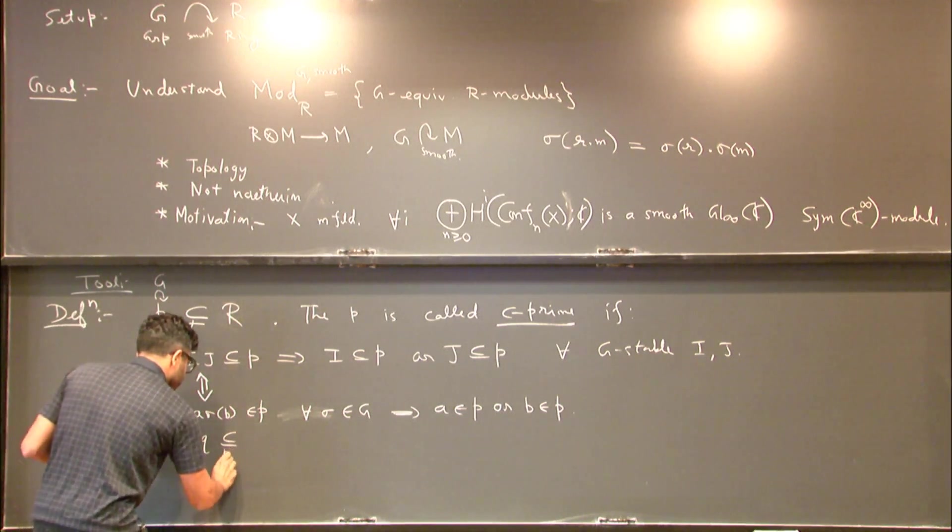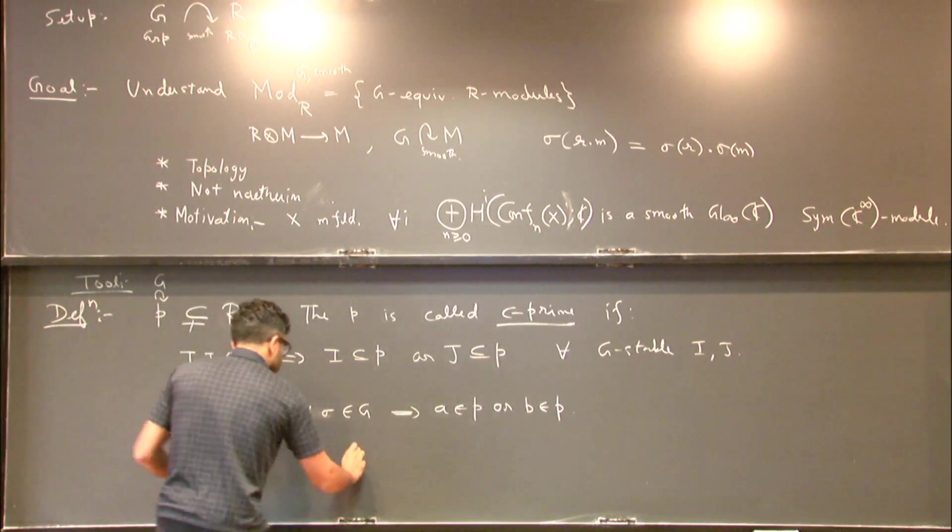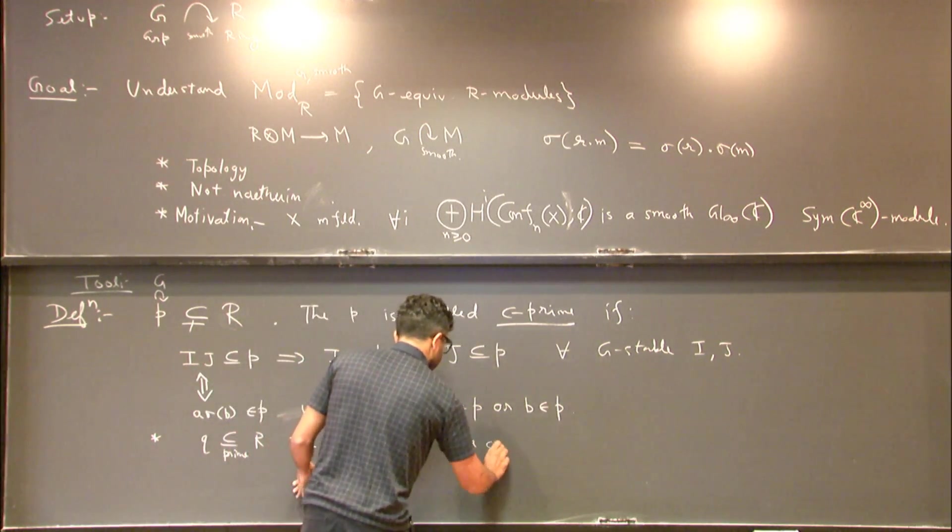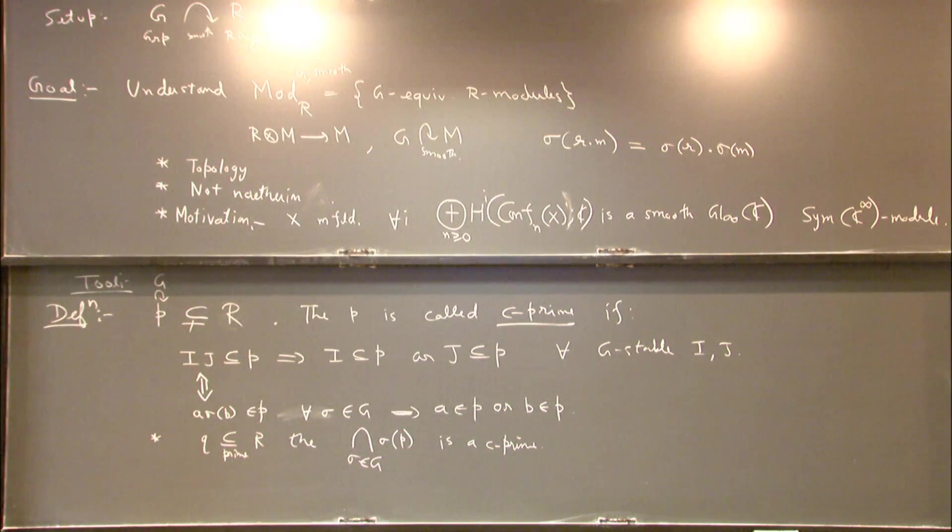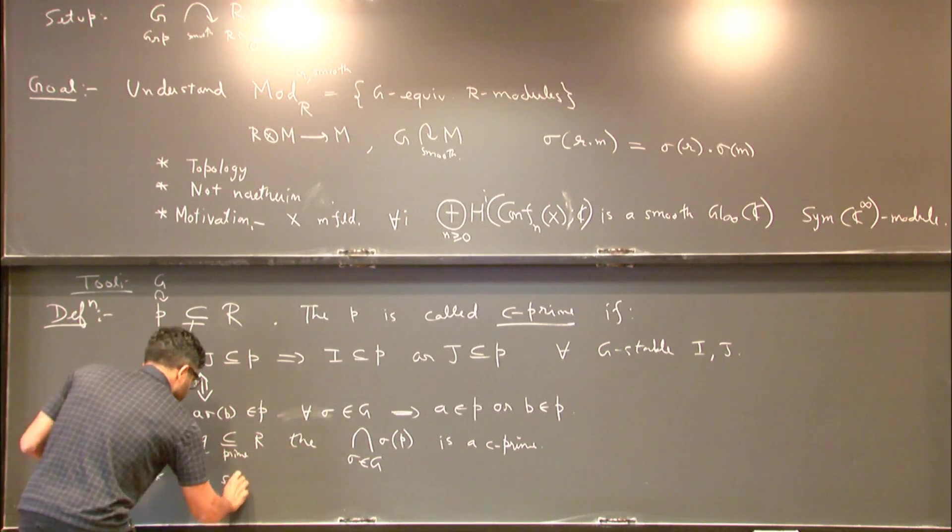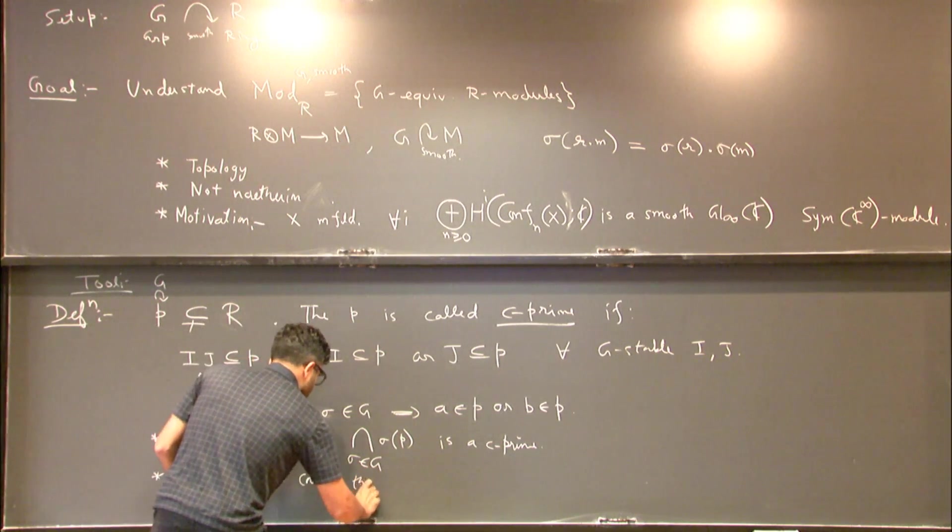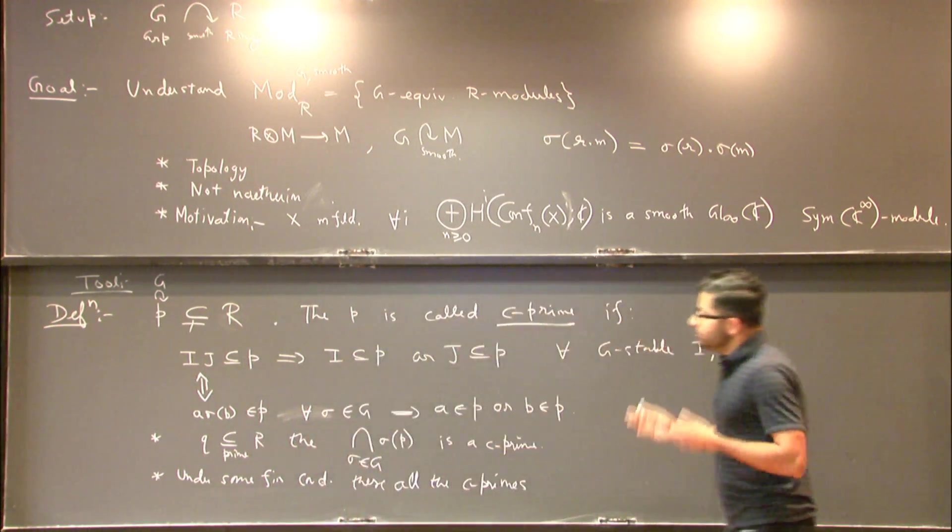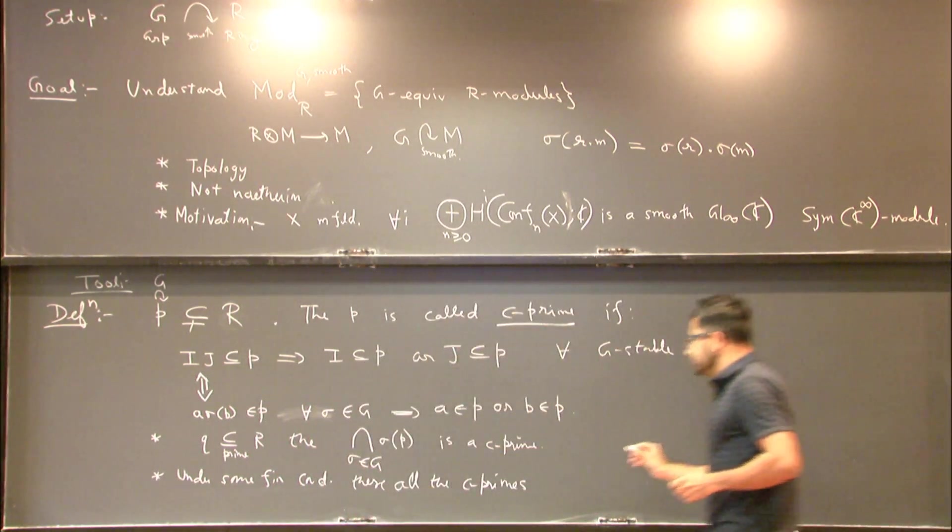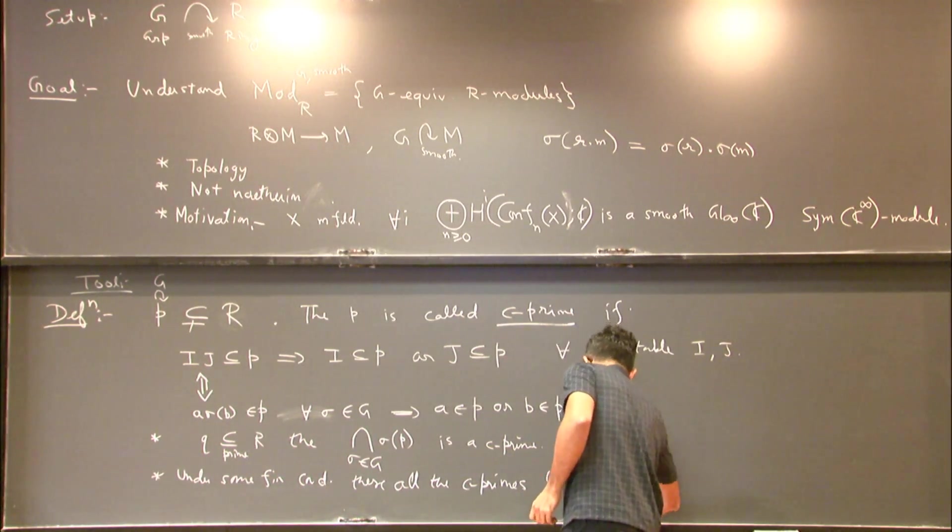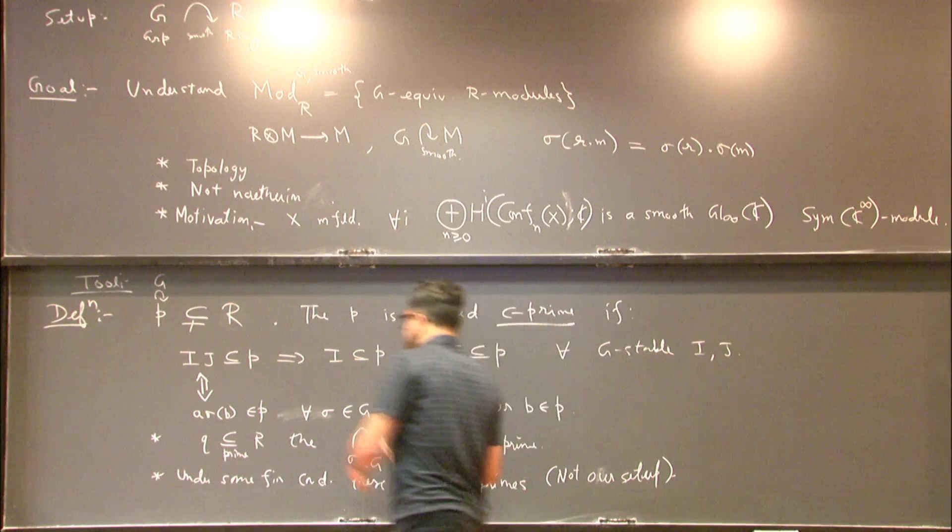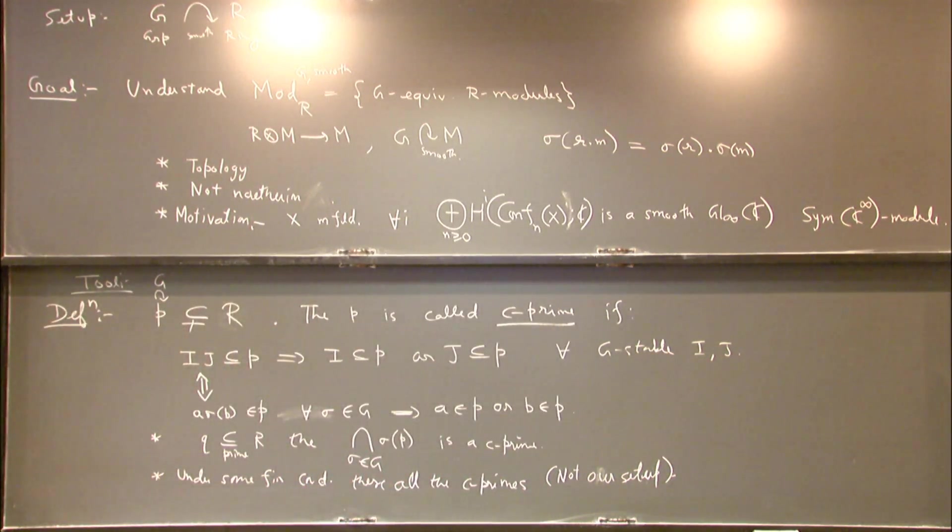So if Q is a prime of R, then the intersection of all the primes in the orbit of P is a C prime. So this is an example where you can construct such a C prime. In fact, under some finiteness conditions, these are all the C primes. All C primes appear like this under some finiteness condition. But this is not going to be our setup. I'm going to be interested in things where this is going to fail. So that is why this definition is going to be important because I can't just think of orbits of primes in this case.